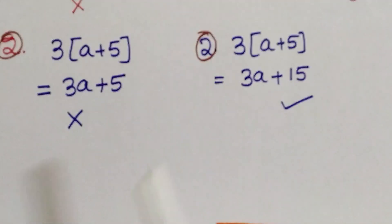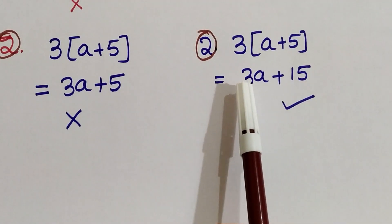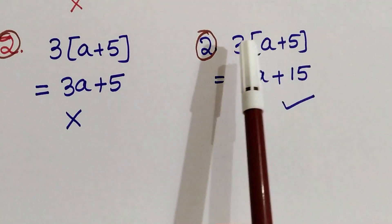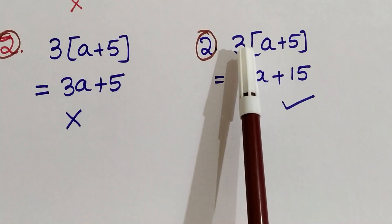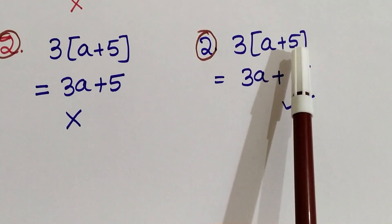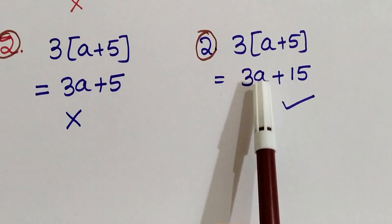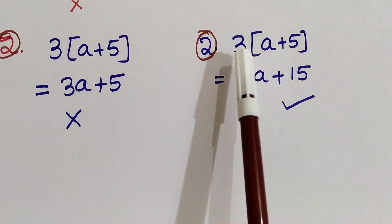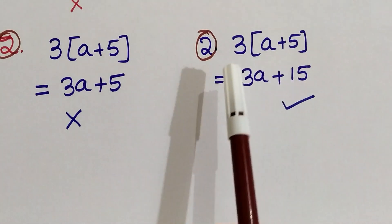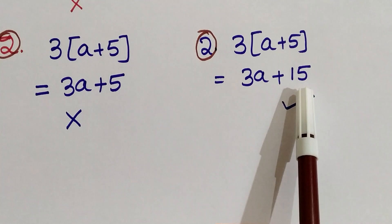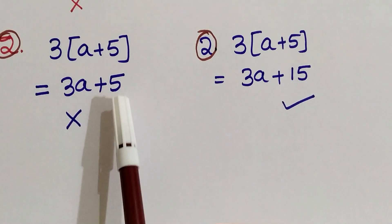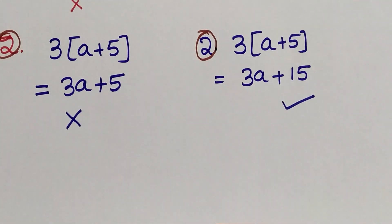The correct procedure is: (A plus 5) is multiplied by 3, so we have to multiply 3 with both terms in the bracket. 3 into A is 3A, and 3 into 5 is 15. So 3A plus 15 is the correct answer, and 3A plus 5 is the wrong procedure.